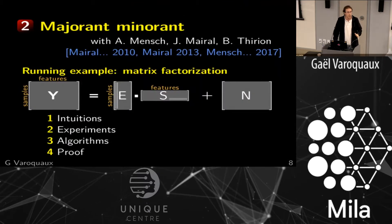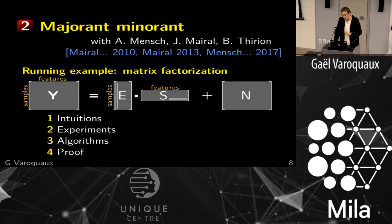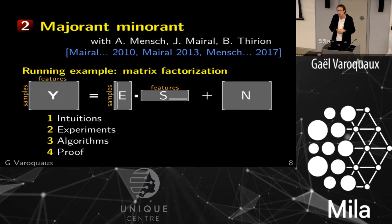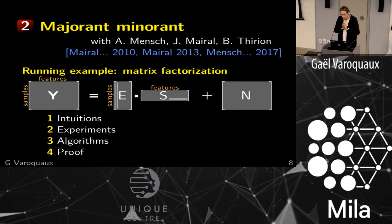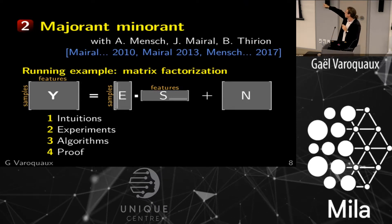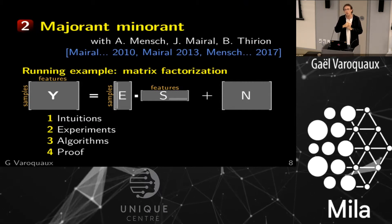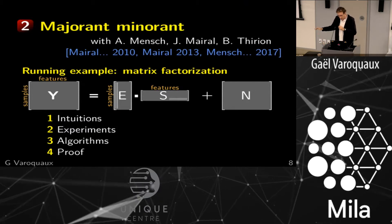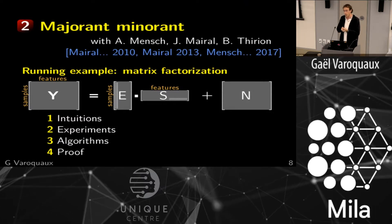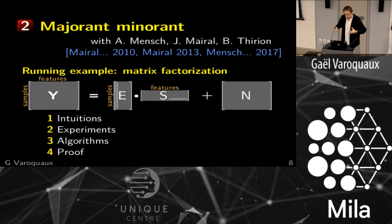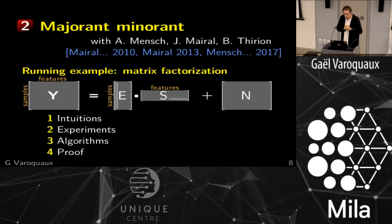Now I want to move to something different: the major-minor class of algorithms, which are pretty much the same as alternated optimization — I'll explain why. The Meral 2013 paper really proves the convergence of this class of algorithms in stochastic settings. Unfortunately it's an extremely technical paper and not read a lot because it's very hard. But the core results are there, and the delta we made with our 2017 publication is important.